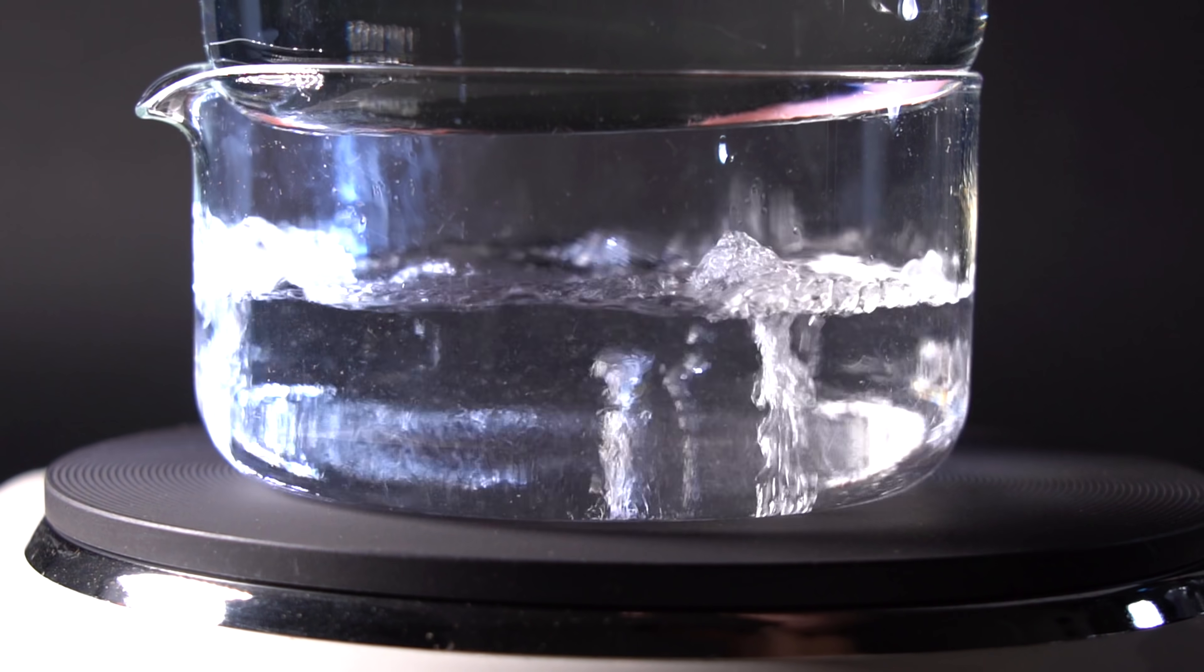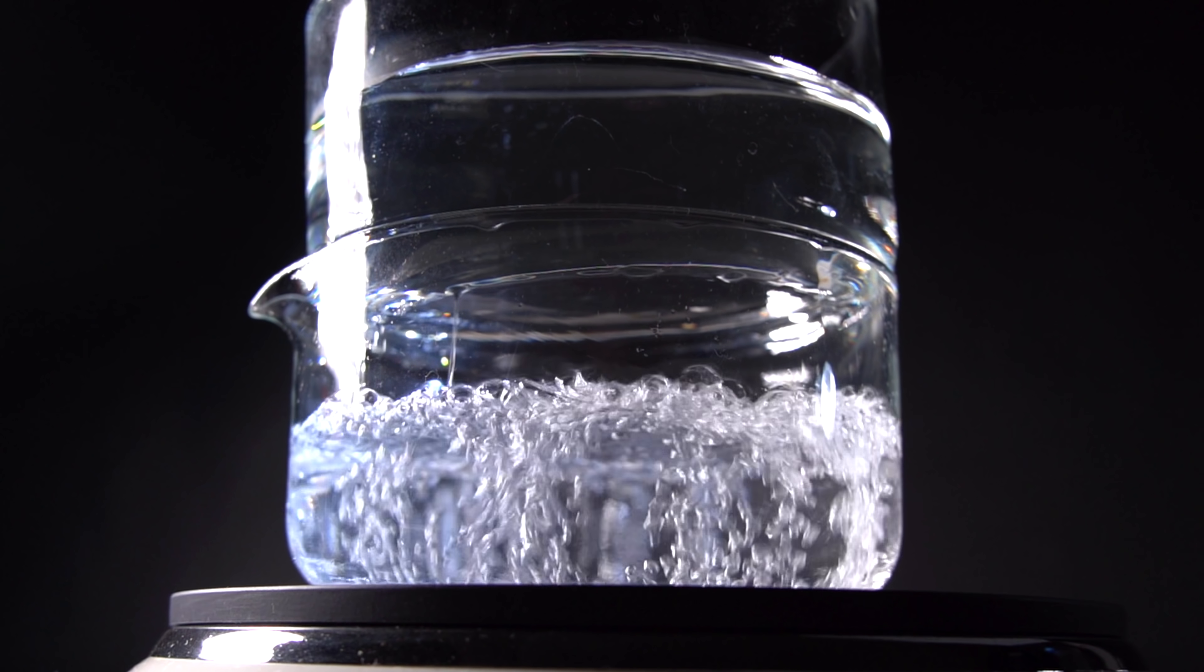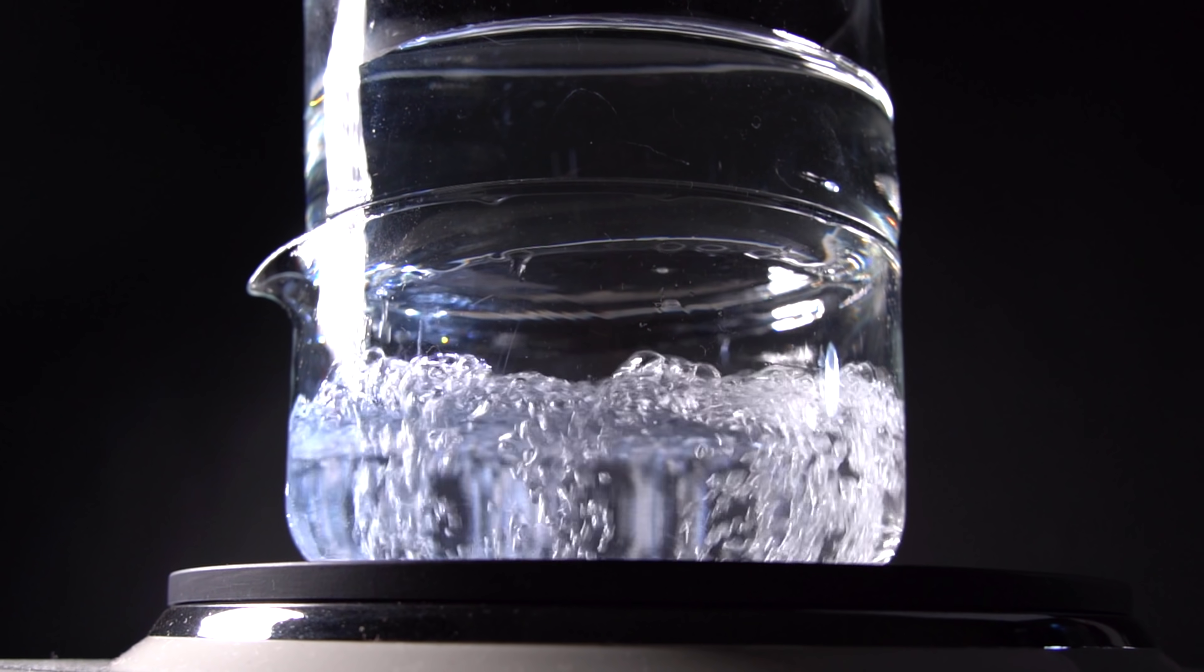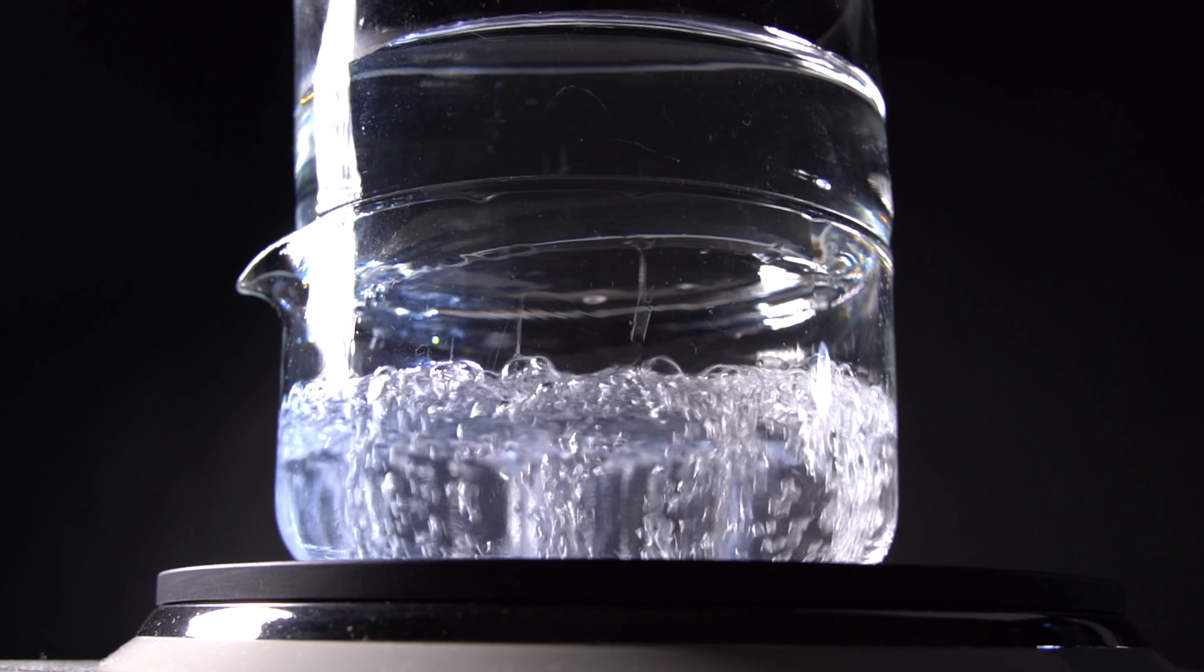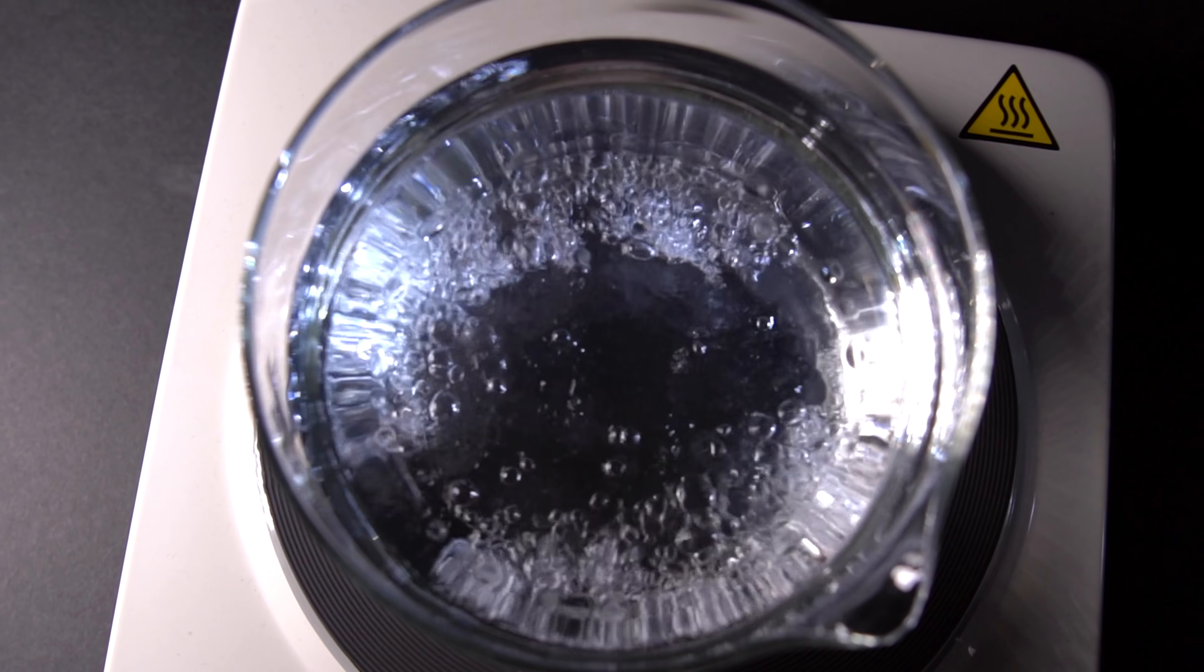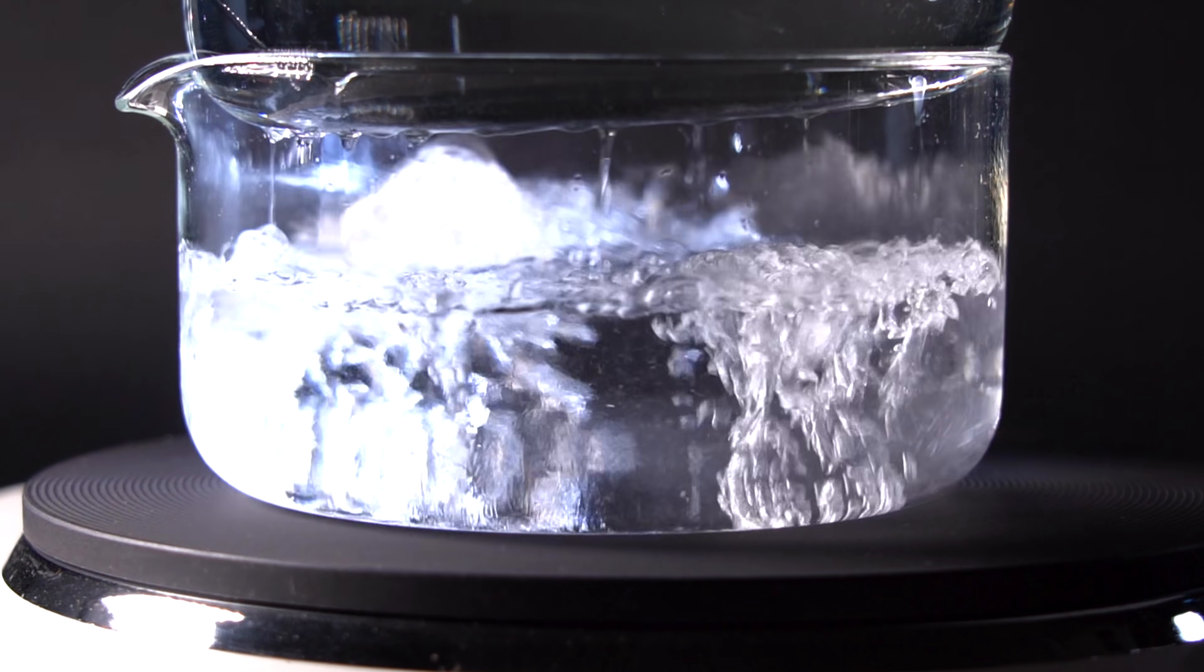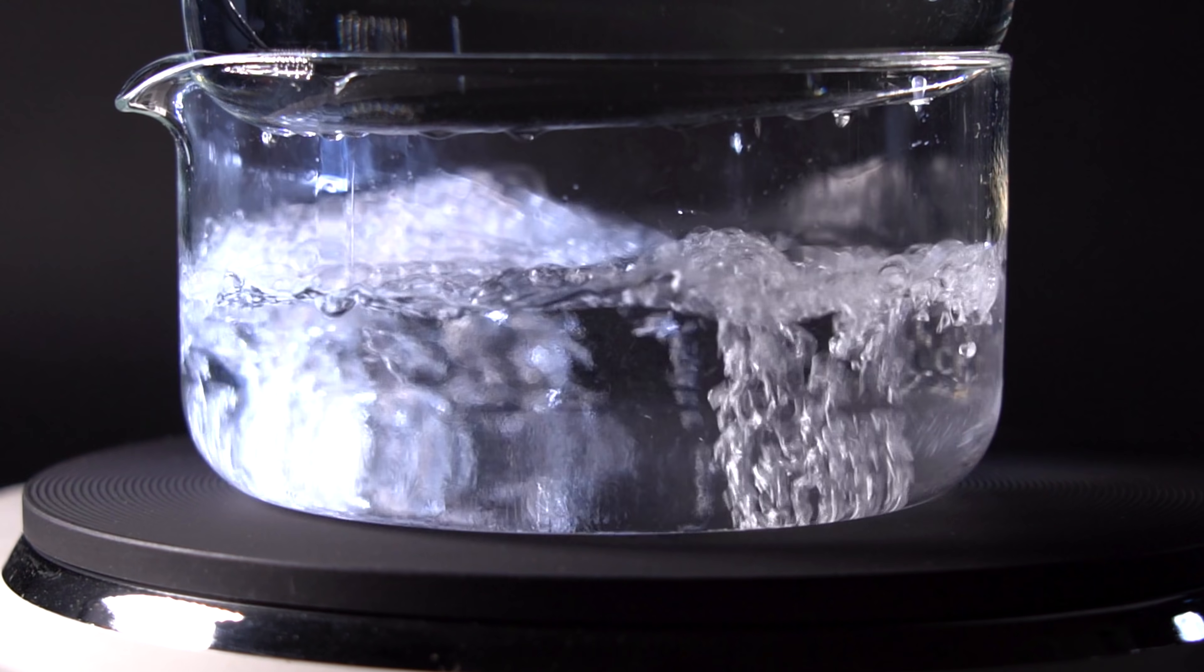If I cover boiling dry water with a glass filled with ice water, we'll see how much vapor leaves the boiling fluid and condenses on the bottom of the cool glass. If I hadn't covered the boiling dry water, about 300 milliliters of this fluid would have evaporated in about 10 minutes.